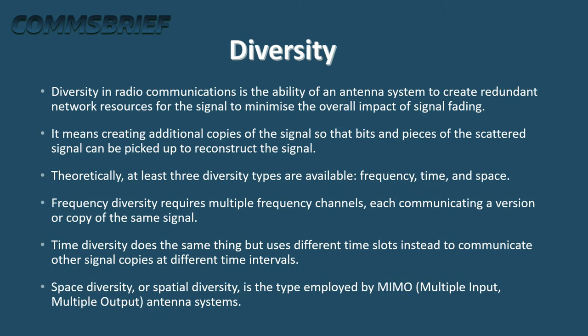Diversity in radio communications is the ability of an antenna system to create redundant network resources for the signal, to minimize the overall impact of signal fading. It means creating additional copies of the signal so that bits and pieces of the scattered signal can be picked up to reconstruct the signal. Theoretically, at least three diversity types are available: frequency, time, and space diversity.